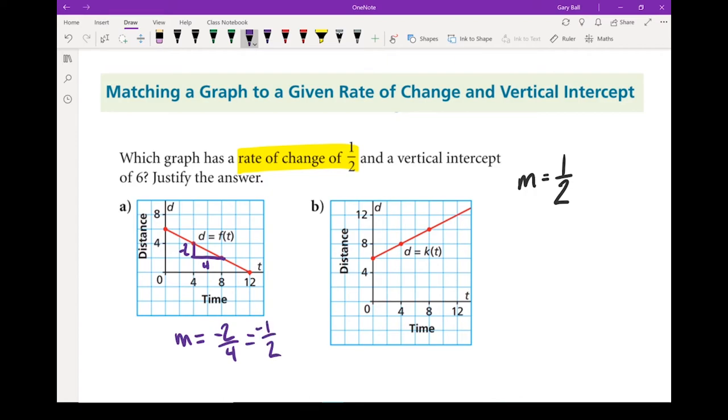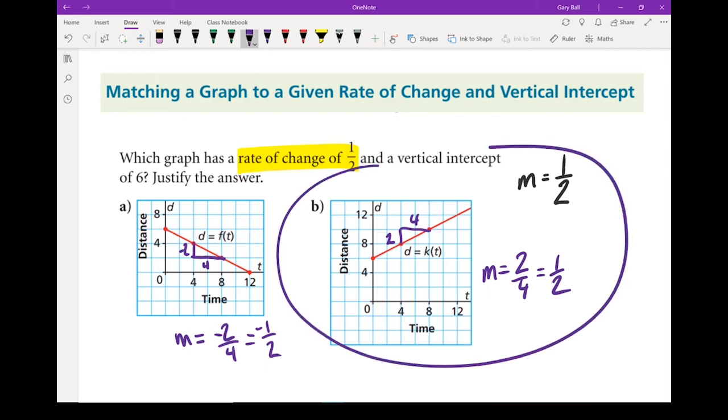If I look at graph B, make that triangle again. Once again, I've got a rise of 2 and a run of 4. In this case, m equals 2 over 4. Simplify it to being 1 over 2. So this is our graph.